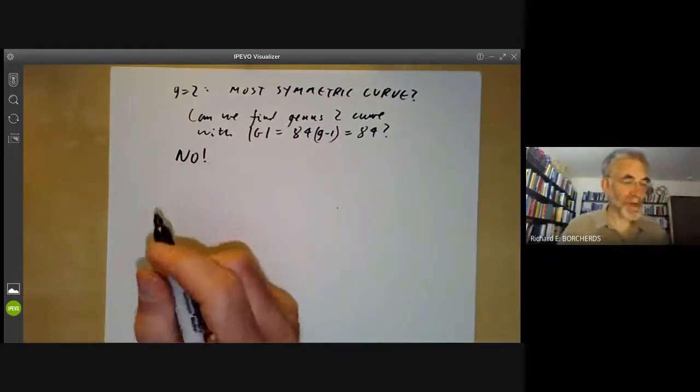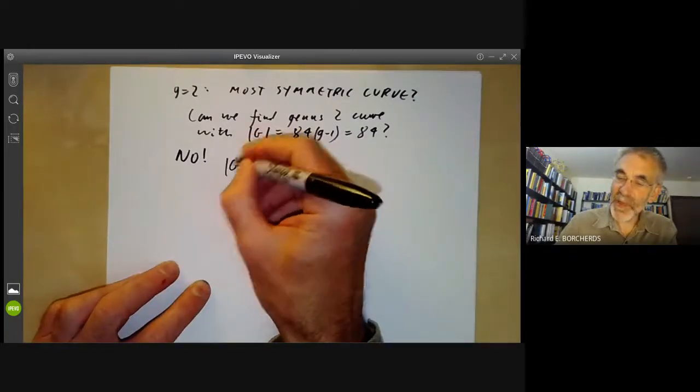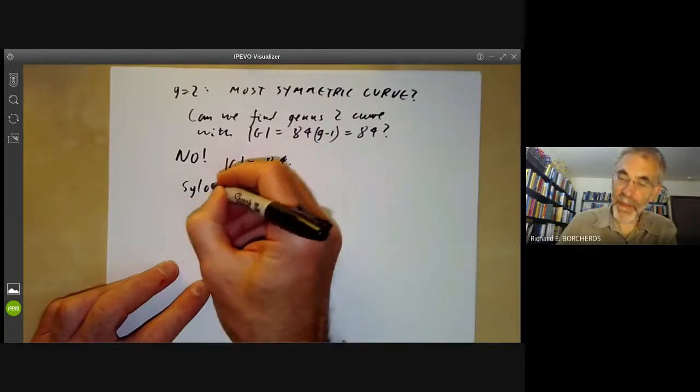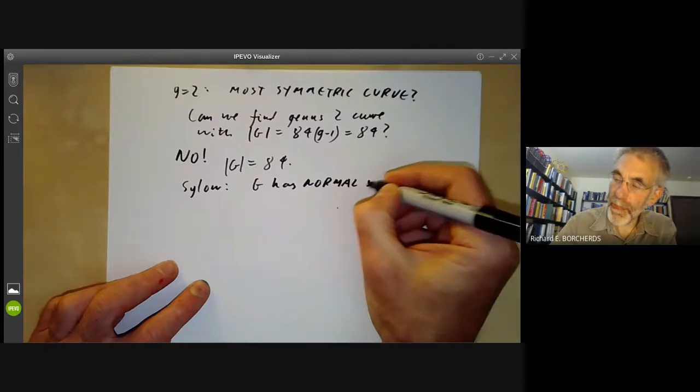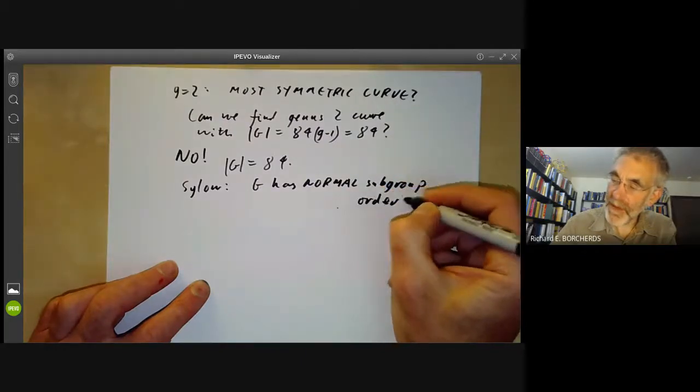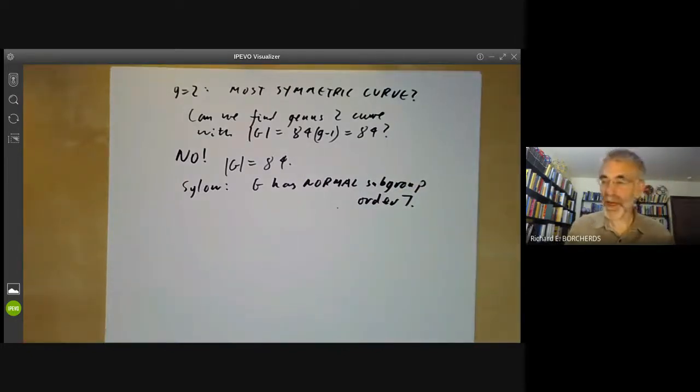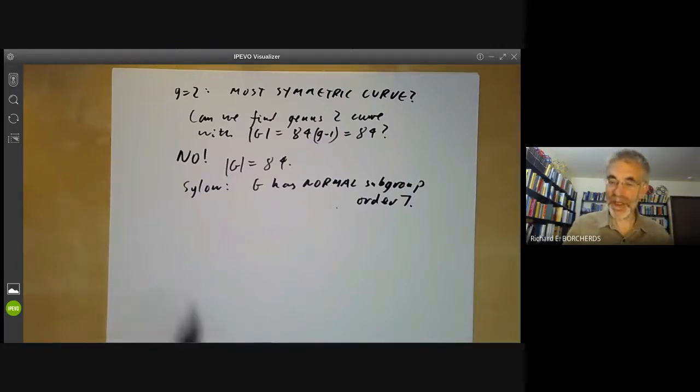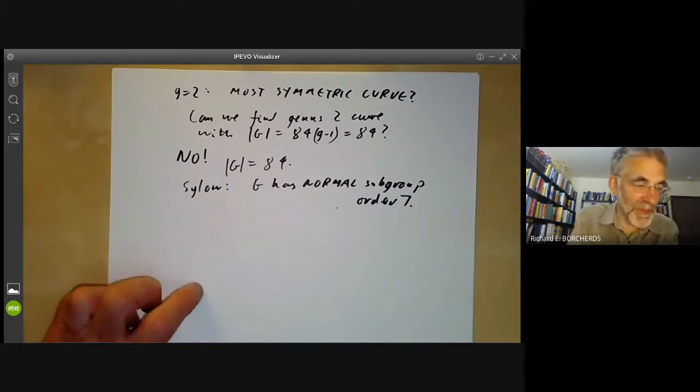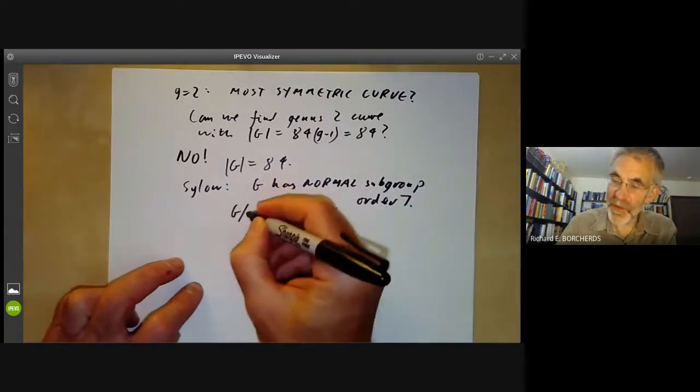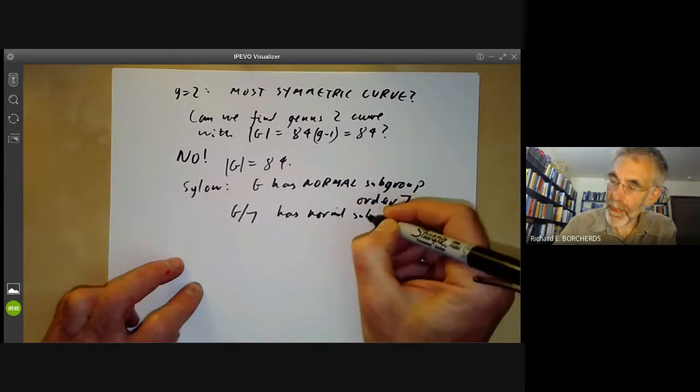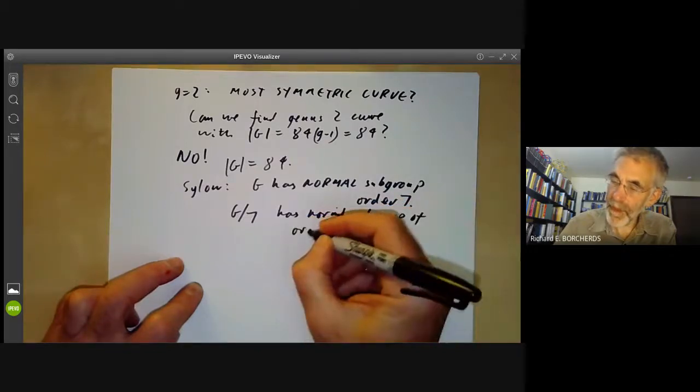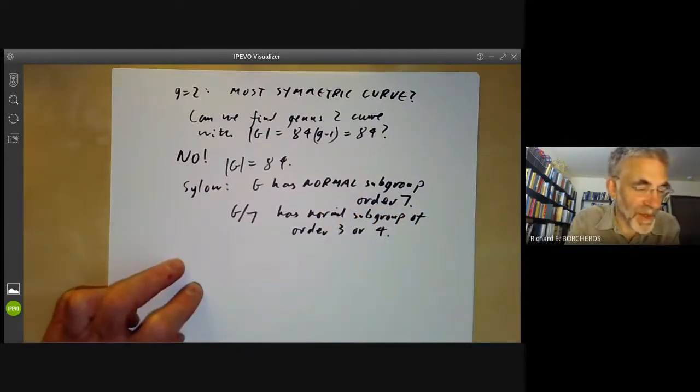And this is not very difficult to show. So suppose G has order 84. We can apply the Sylow theorems. So by the Sylow theorems, G has a normal subgroup of order seven. So regularly get complaints in group theory courses that nobody knows of any applications of Sylow theorems outside finite group theory. Well, here's one: you can use them to eliminate Hurwitz surfaces of genus two. So the quotient achieved by this group of order seven has order 12 and has a normal subgroup of order three or four, which again is easy to do by applying the Sylow theorems to it.